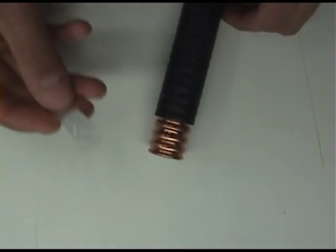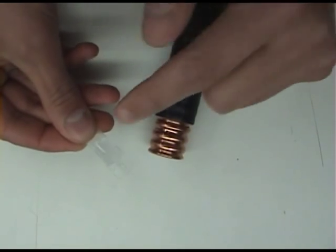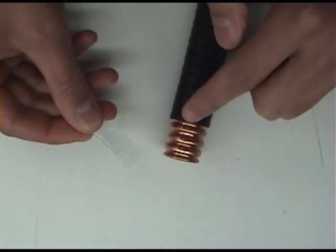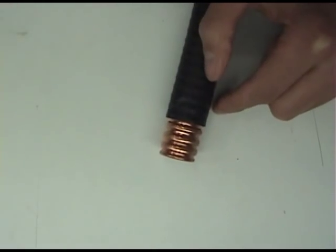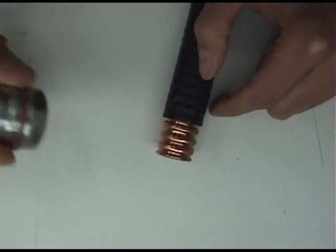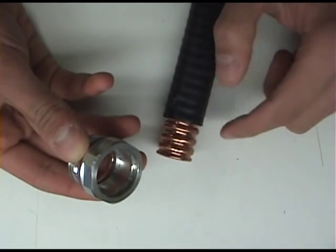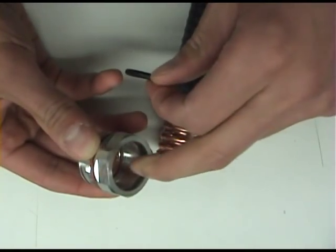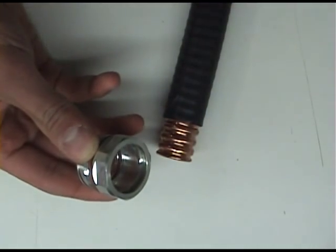The next step is to take the small pack of lubrication that came with the connector and apply it to the jacket. This helps the O-ring that's inside the connector body slide onto the jacket. I remove the O-ring for demonstration purposes—that's where it usually sits.